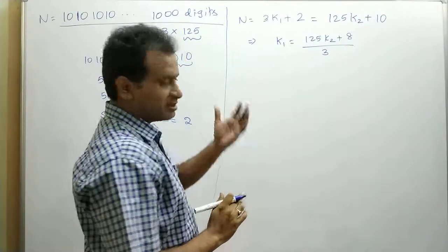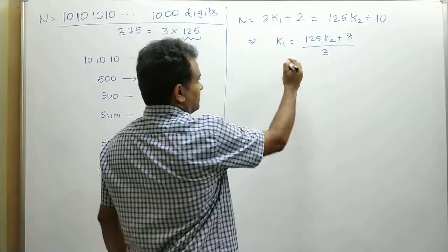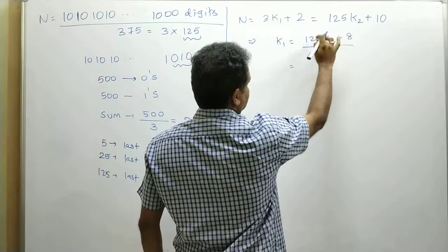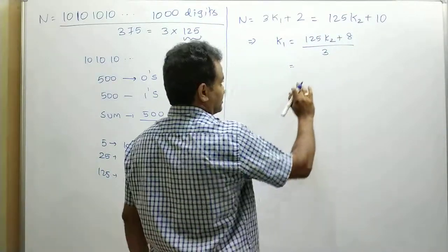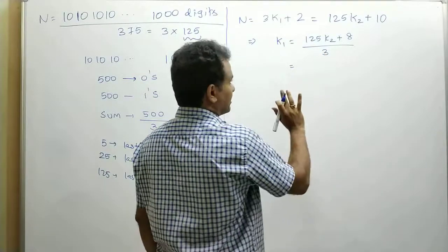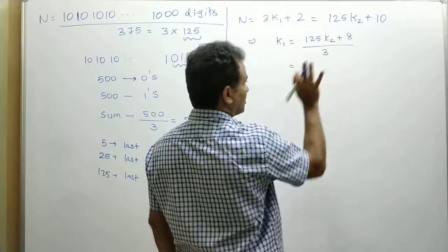Here k₁ is an integer, k₂ is also an integer. First of all, let us divide this expression by 3 and separate the integer and fraction parts. The integer part is not required for us. We are focusing only on the fraction part.